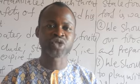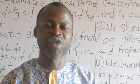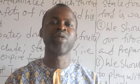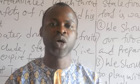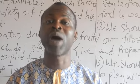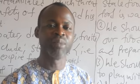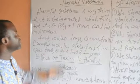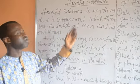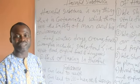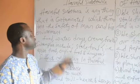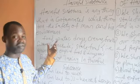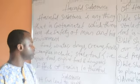When we say harmful substances, it could be a form of food, it could be a form of drugs, it could be a form of cream or fruit. It could be fruit that is contaminated, and when eaten it becomes harmful to man. As I have on the whiteboard behind us, harmful substances is anything that is contaminated which threatens the safety of man and his environment. It could be food, water, drugs, creams, and fruits.